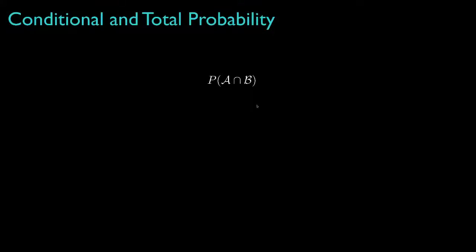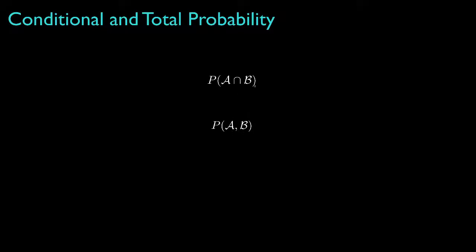The joint probability for two events, A and B, could be written in terms of the intersection of the two events, but it's often written more compactly as A comma B. Either way, these probabilities represent the probability that both events A and B happen.